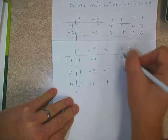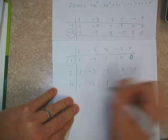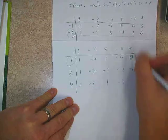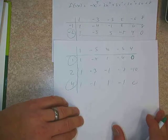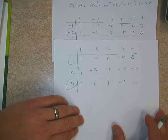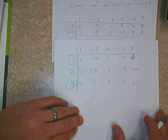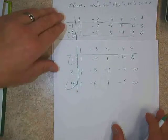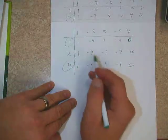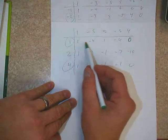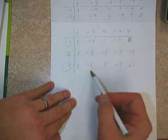If we try 4, we're going to get negative 1 here, 4 is going to give us 1 there, 4 there is going to give us negative 1, and negative 4 plus 4 is going to give us 0. So we found another zero — x equals 4.